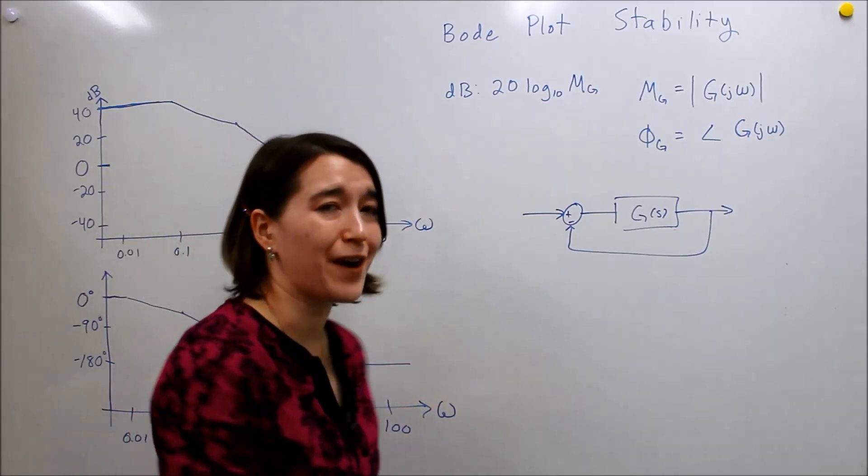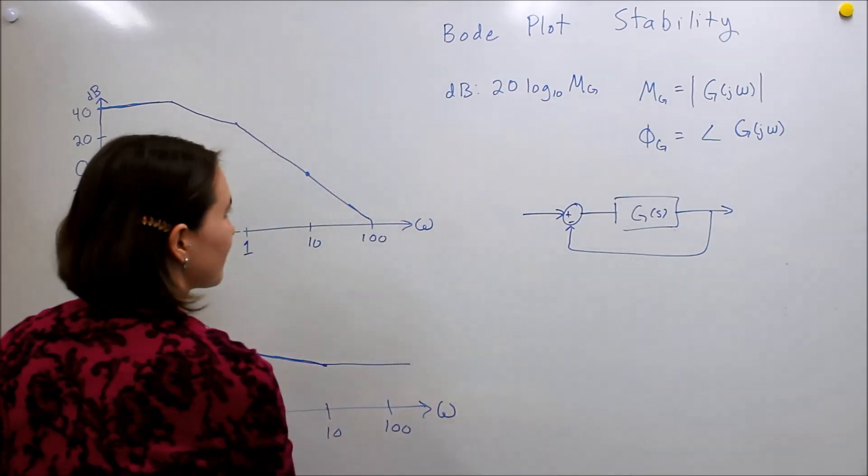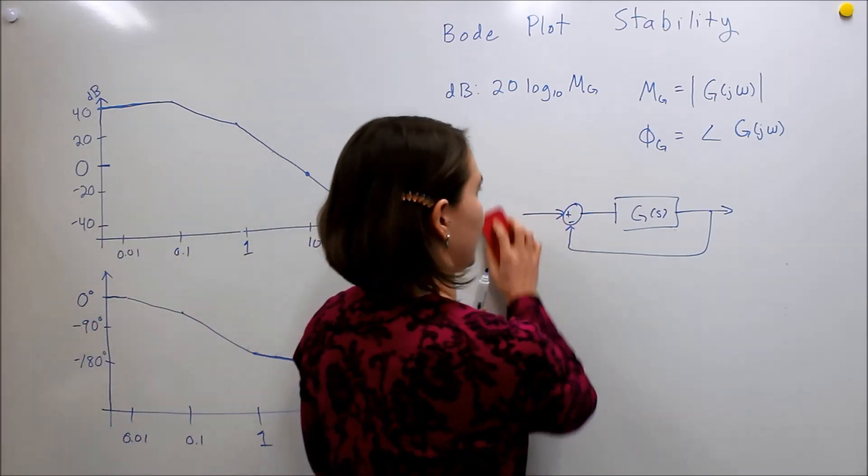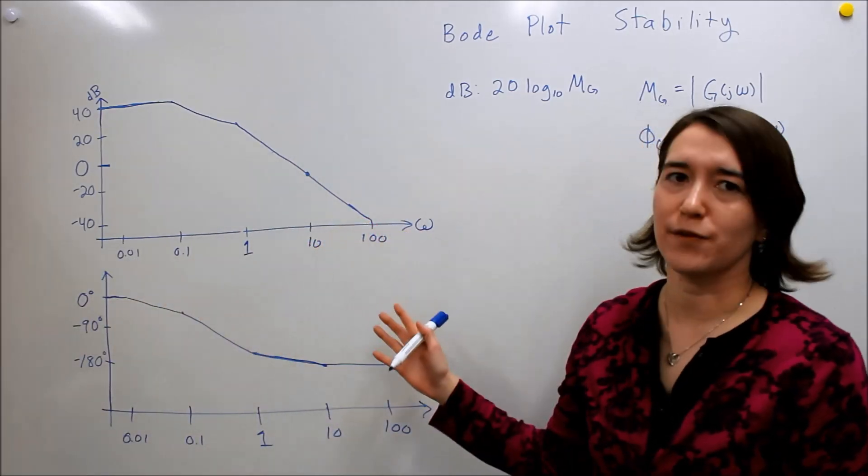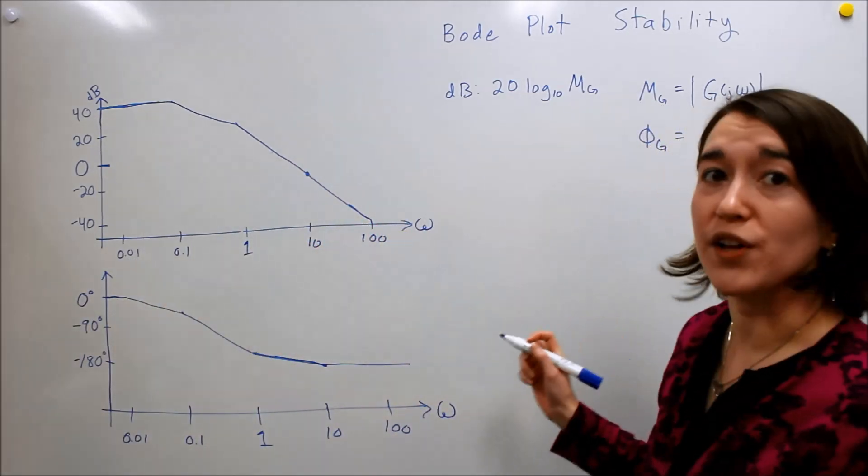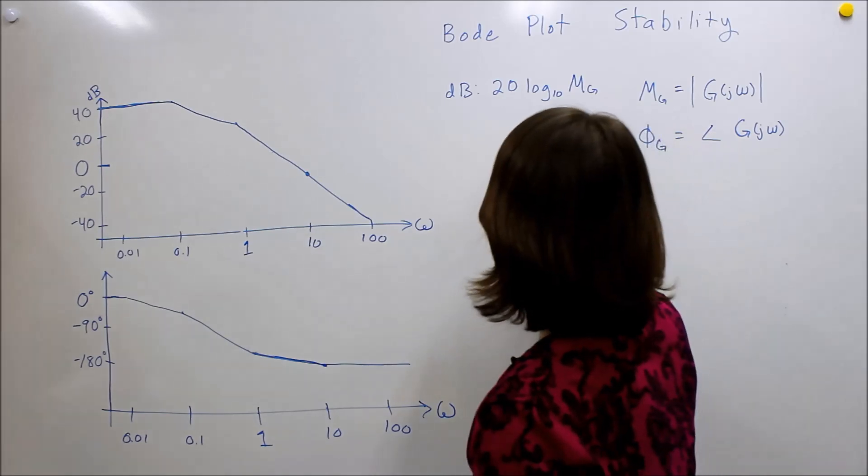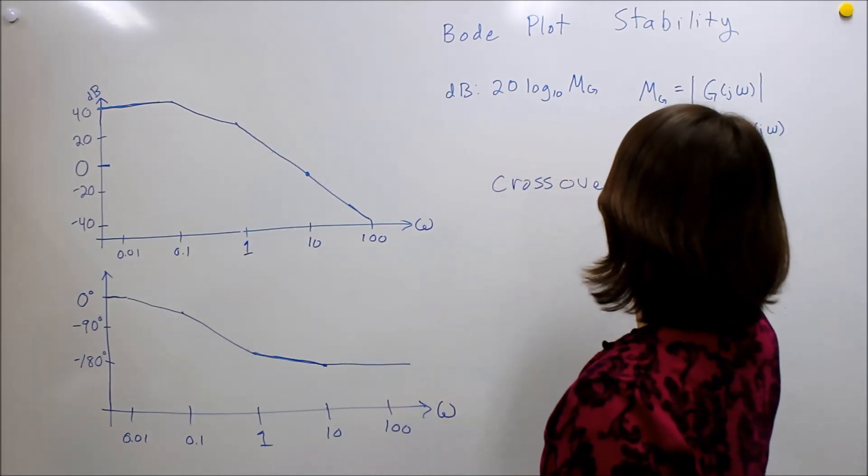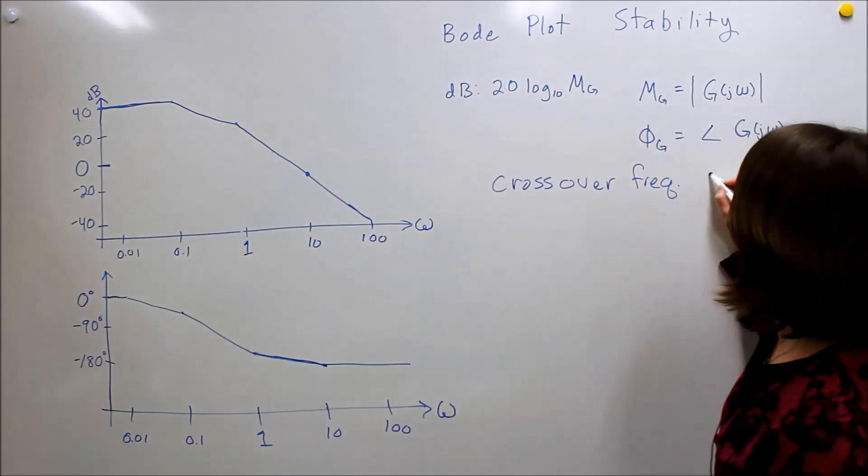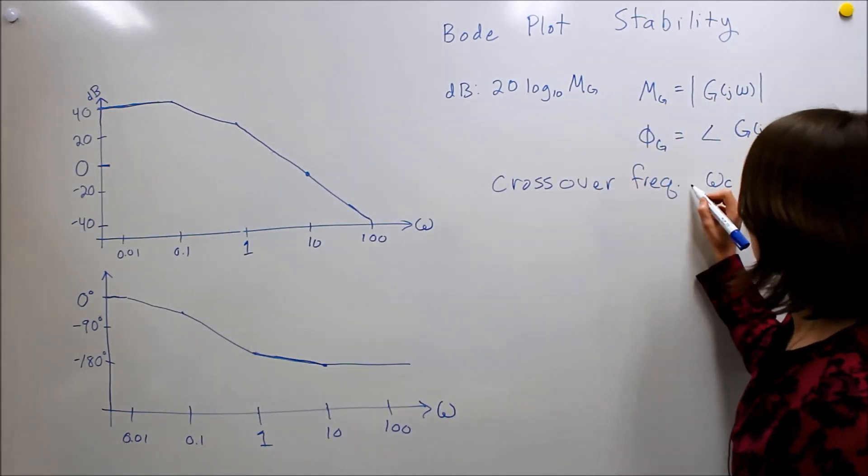And to do that, we need to define some terms. And so, based on this example Bode plot I've drawn here, we're going to define a few terms. The first one is called the crossover frequency, which we sometimes just call with an omega c for crossover.